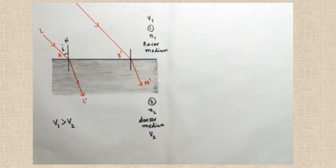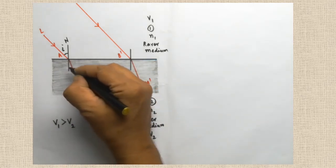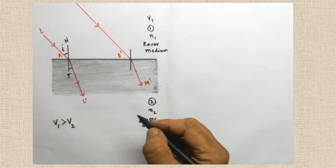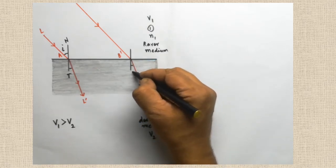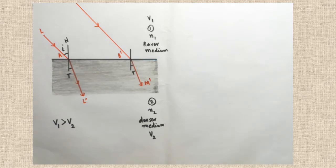So the name of this second refracted ray must be named as BM dash. Here you are getting the angle of refraction R. Like that, here also we are able to mark the angle of refraction R. Now, two mediums are there, and we are going to draw the wavefront for the incident ray.